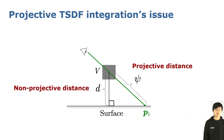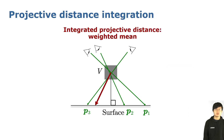Previous methods used projective TSDF integration, which is actually problematic. As shown in this figure, the robot takes an observation through voxel V and hits the surface at P1. The non-projective distance to the surface should be D, but voxel V actually takes the projective distance as its signed distance value. Even by taking the weighted mean of the projective distance from different perspectives, the integrated value is still an overestimation.